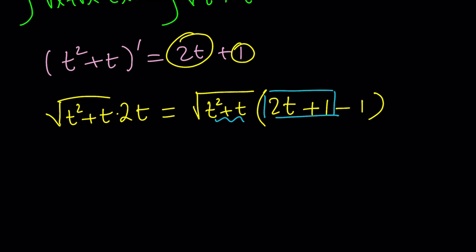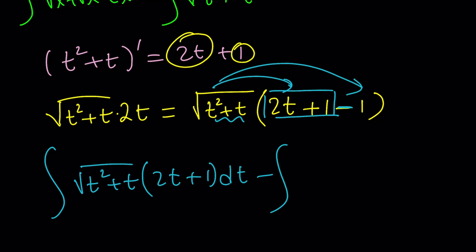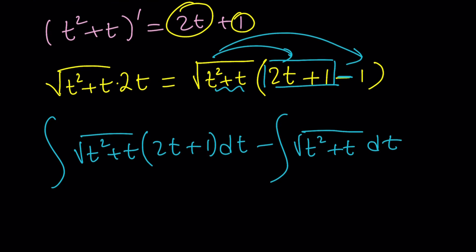Let's plug this into the integral. It becomes the integral of the square root of t² + t times (2t + 1) dt, minus the integral of the square root of t² + t dt, after distributing the minus sign. So we split this into two integrals: I'll call this the first integral and this the second integral, and I'll handle the first one first.